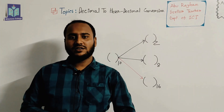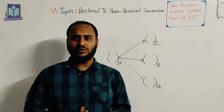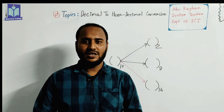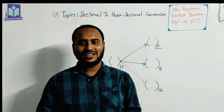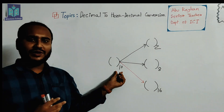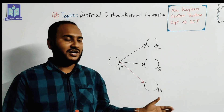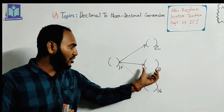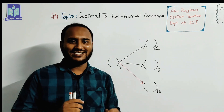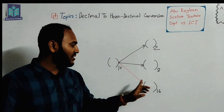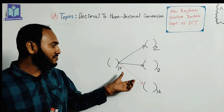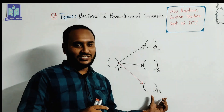Students, you already know there are four types of numbers on the basis of base: decimal, binary, octal, and hexadecimal. The possibilities of number system conversion include decimal to binary, decimal to octal, and decimal to hexadecimal. Today we discuss how to calculate a decimal number into a hexadecimal number — that is, a number of base 10 converted into the equivalent number of base 16.